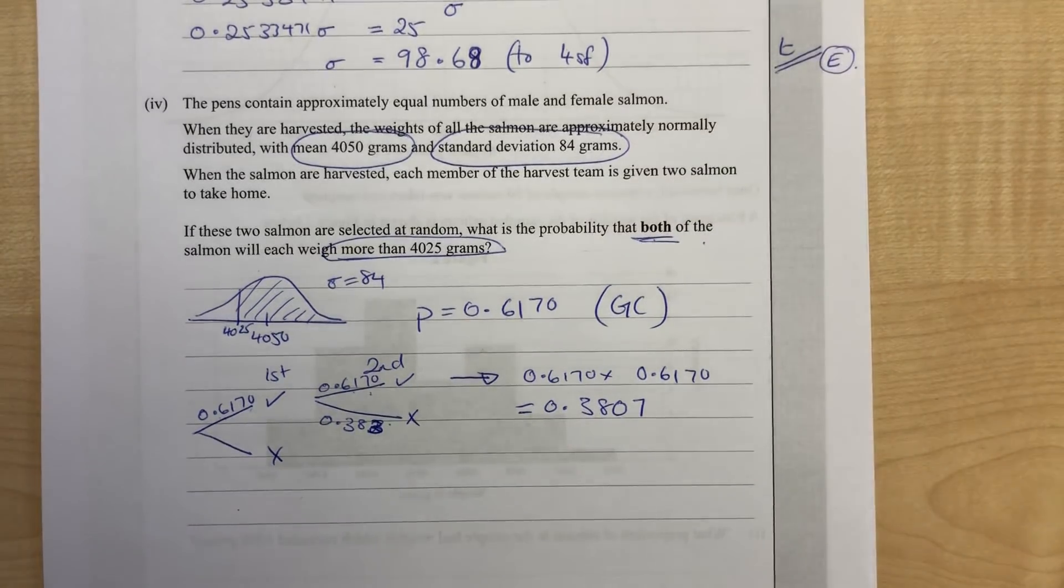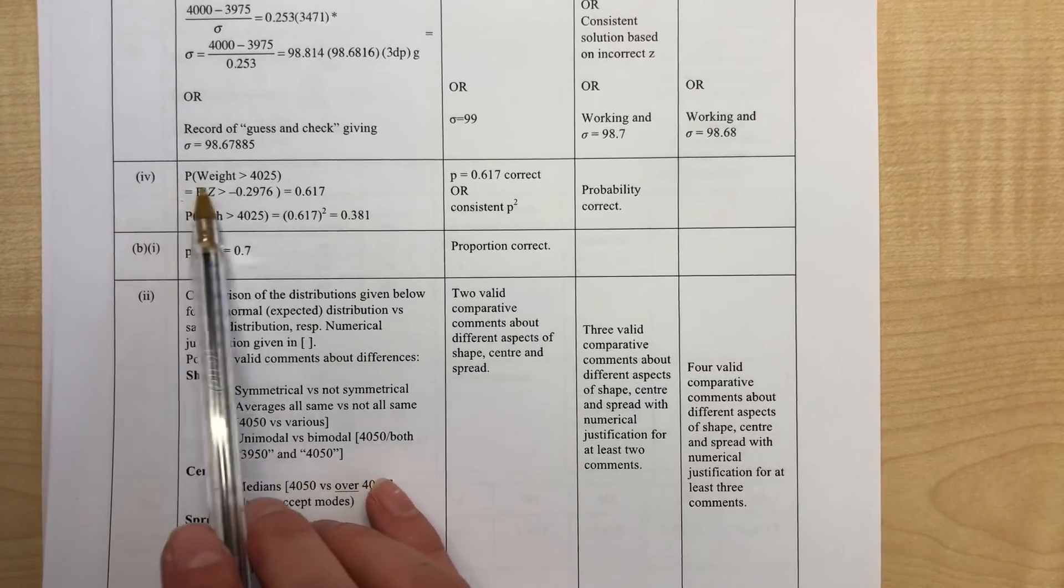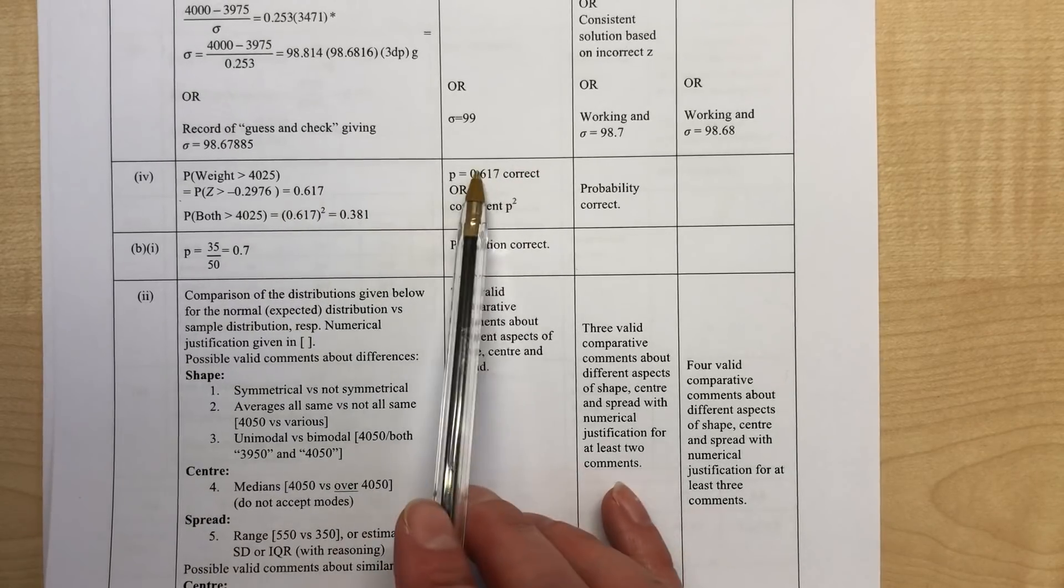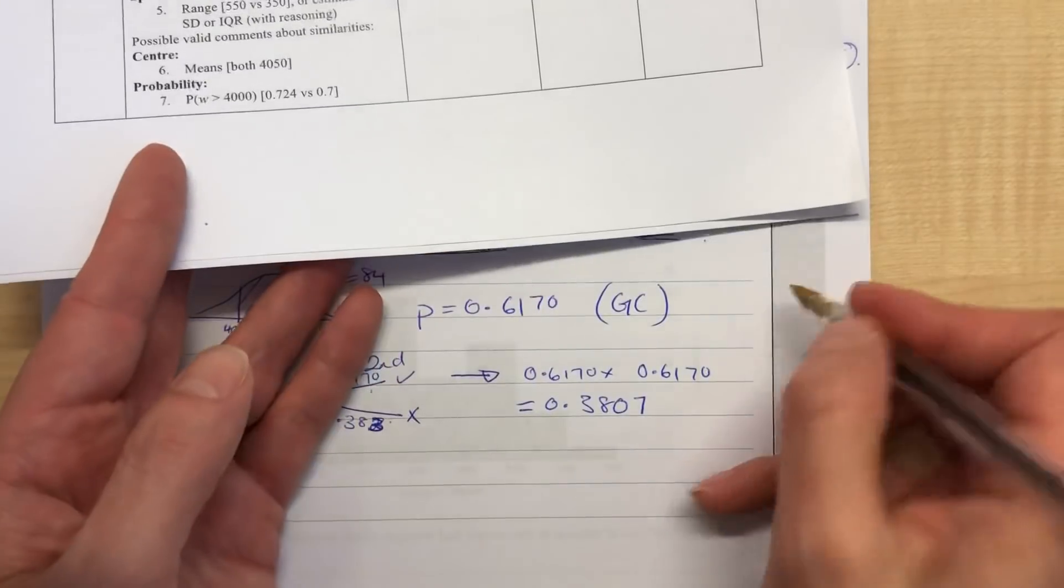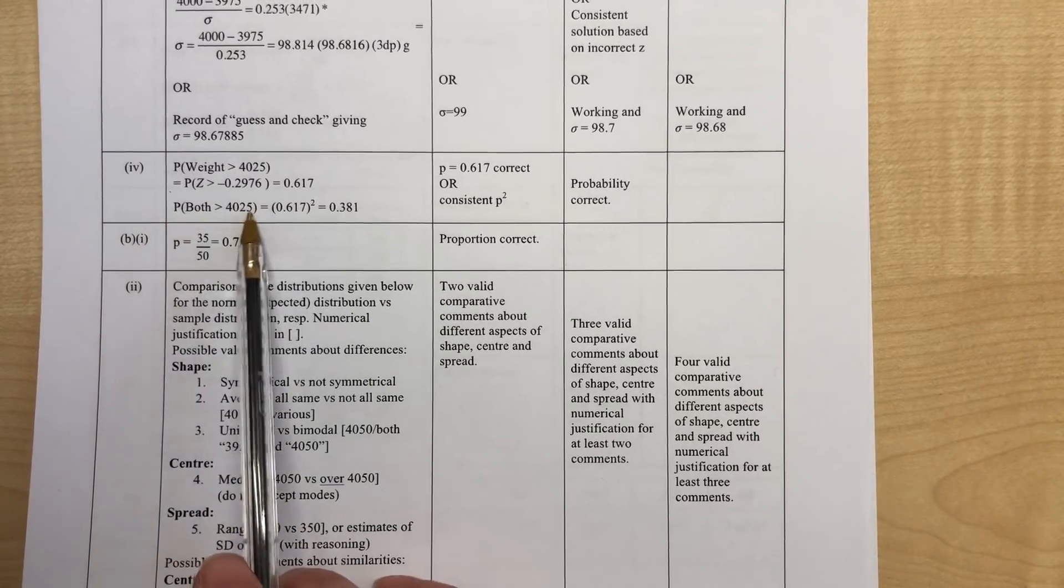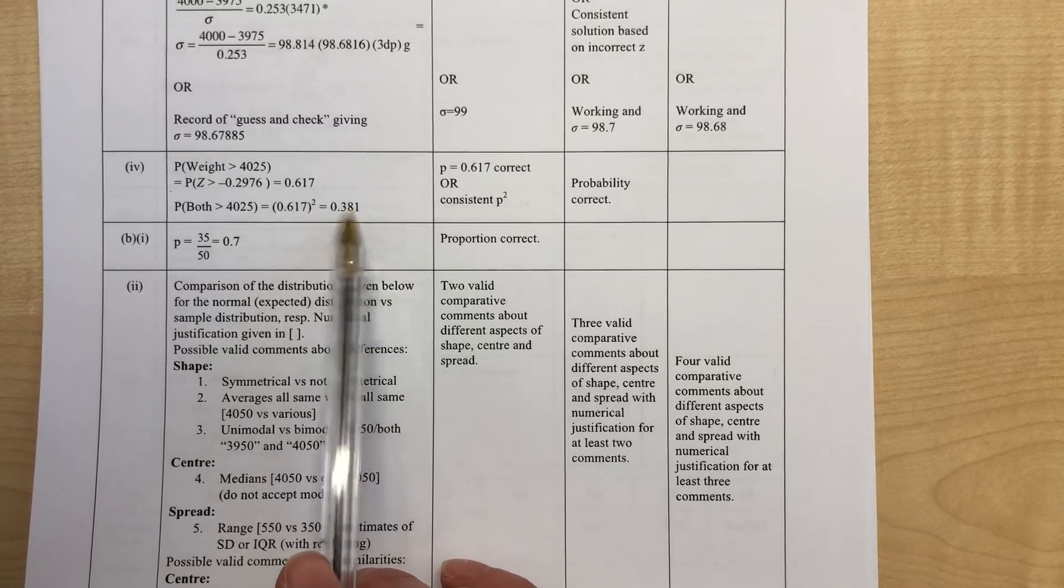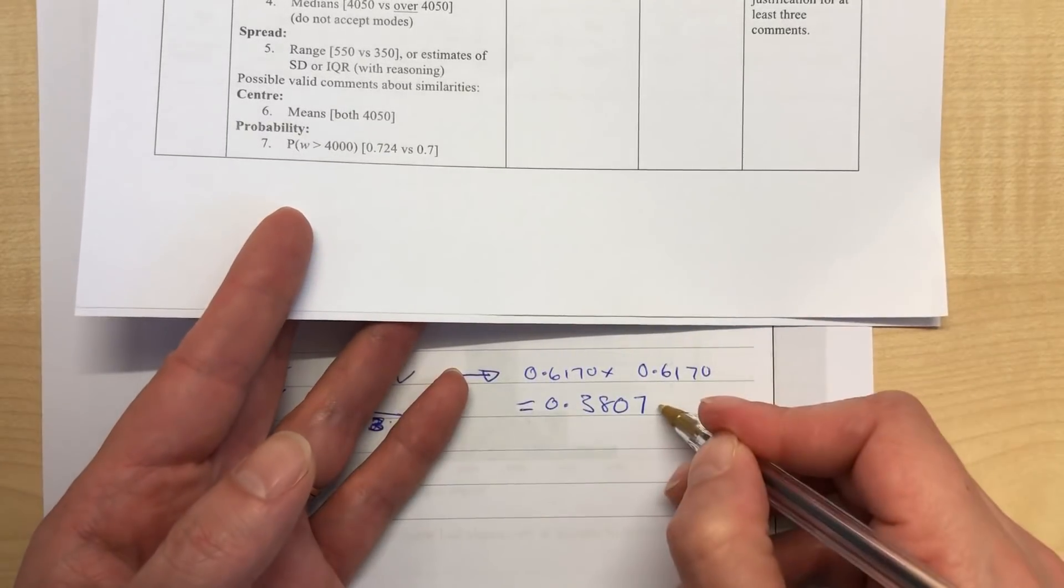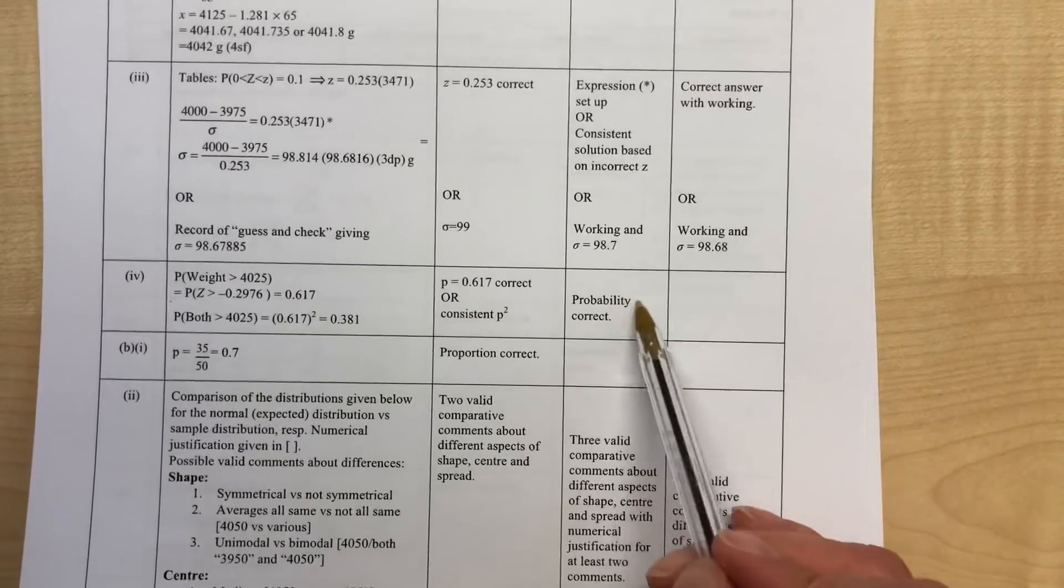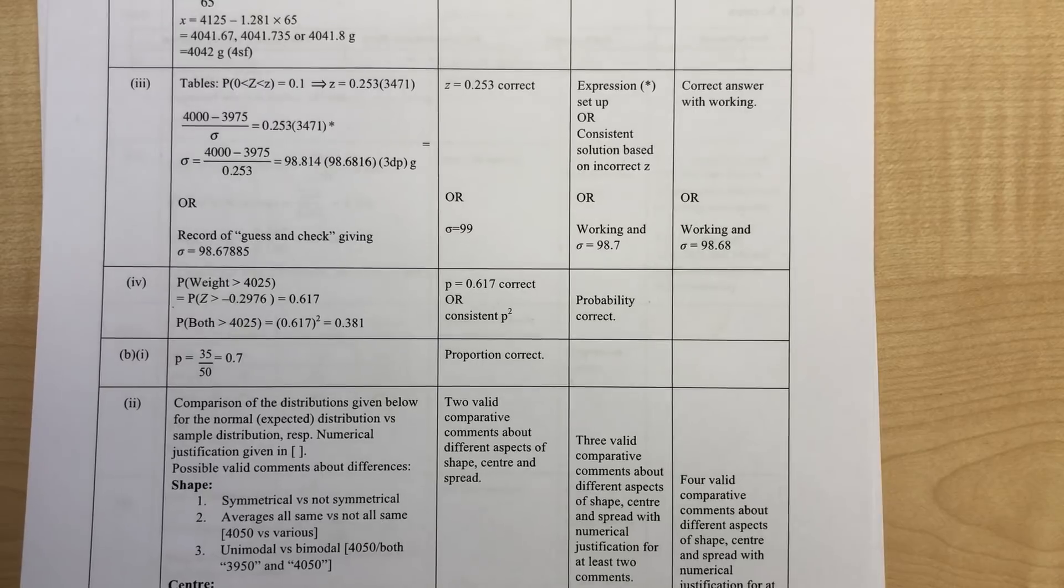We'll check against the mark scheme. Part 4: the weight that they're above is 0.617, which gives us an achieved point, a u. Both of them above that is 0.617 times itself, so 0.381. That gets us an r, a merit point for that one.